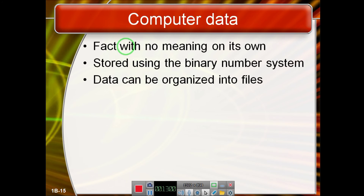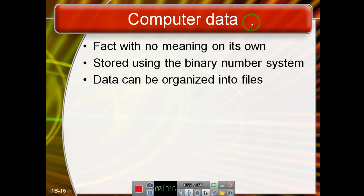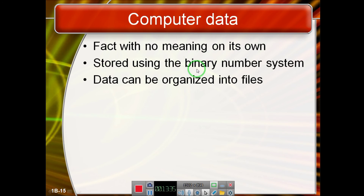As far as data is concerned, it consists of facts, figures, numbers, and symbols that have no interpretation or inferencing on their own. Once we transform data into information, that information becomes useful. Data can be organized into files and is stored in binary form, since we use digital systems. Binary data means data is stored in the form of ones and zeros.